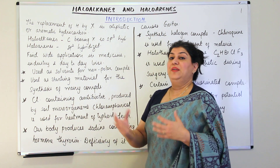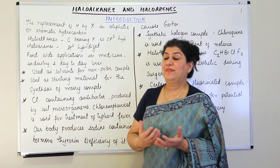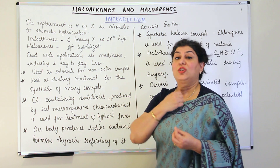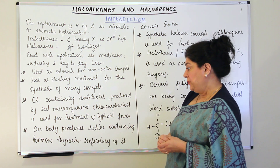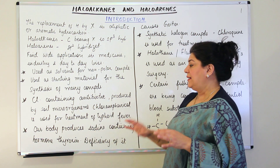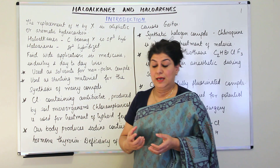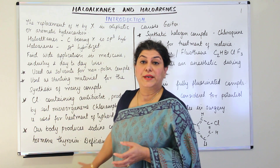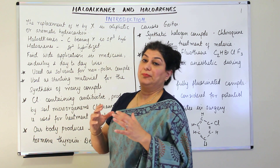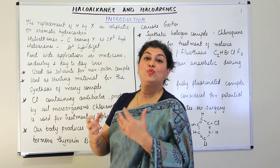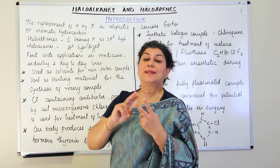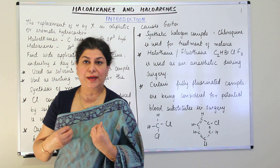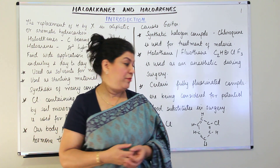Another example from everyday life is the hormone thyroxine, produced by our thyroid glands. Our body produces an iodine-containing hormone called thyroxine, and a deficiency of thyroxine or iodine leads to a condition called goiter. If thyroxine is secreted in too much or too little quantity, it results in hyperthyroidism or hypothyroidism, where the thyroid is overactive or underactive, respectively.